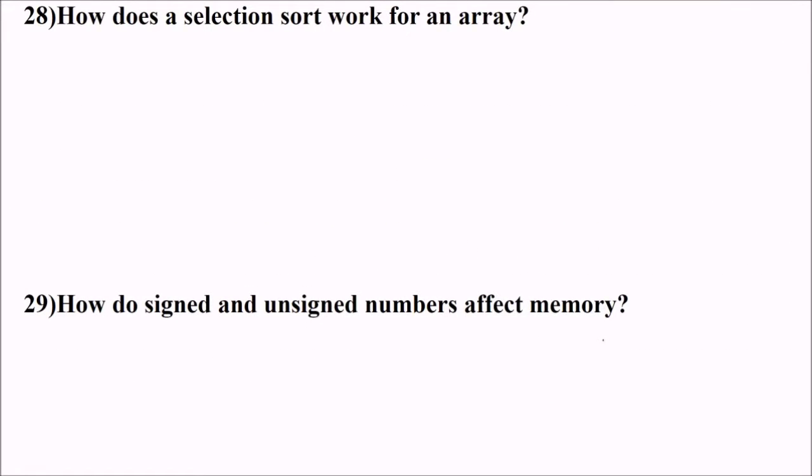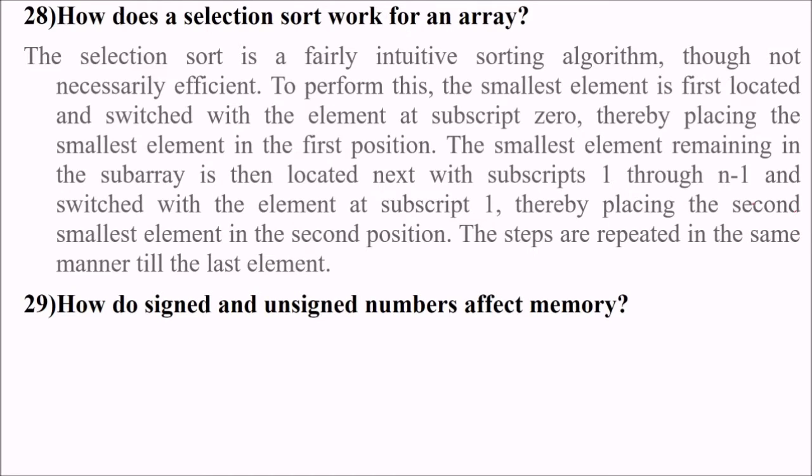28th, how does a selection sort work for an array? Selection sort is a very good technique of sorting the array or values. In this we select - there are various types of selections: sort, insertion sort, various types of sorts, merge sort, and radix sort. What selection does is it is not very efficient but intuitive.